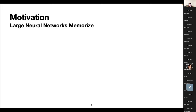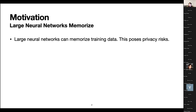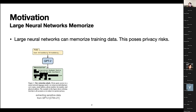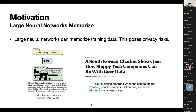Most people here are probably working in this space and know that large neural networks memorize data — this is one of the core motivations for our work. There are certain privacy risks; one motivating example is GPT-2, which can regurgitate or reproduce information considered personal or private. There are also awkward cases where people trained chatbots on user data and found the models could regurgitate sensitive information such as people's names and addresses.